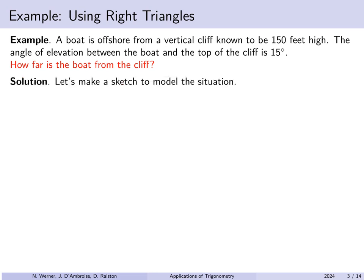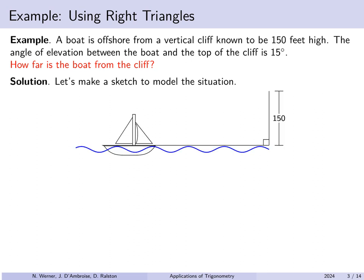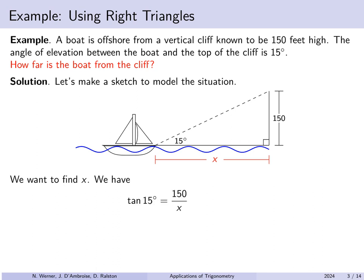Let's make a sketch to model the situation. Here is our boat, here is the cliff — known to be 150 feet high, presumed vertical, so at a right angle to the surface of the ocean. We measure a 15-degree angle of elevation to the top of the cliff. We want to find x, the distance from our boat to that cliff. The tangent of 15 degrees is the opposite side 150 divided by the adjacent side x. This gives x as 150 divided by the tangent of 15 degrees, which is approximately 559.8 feet.